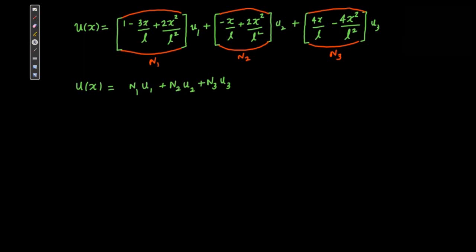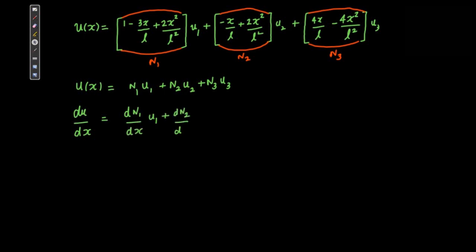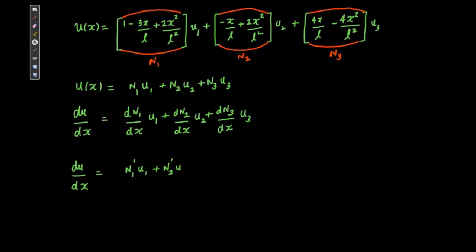Now, when you have the equation for displacement, you can easily find the strain at any point in the bar. The strain at any point is given by differentiating the displacement equation. When you differentiate, you can write dN1/dx as N1', dN2/dx as N2', and dN3/dx as N3'. This shorthand notation just comes in handy.